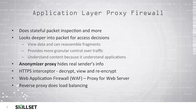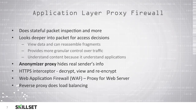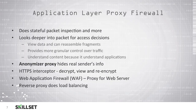Anonymizing proxies are able to hide a sender's information in order to prevent the recipient from knowing where the traffic actually originated. HTTPS interceptors are able to decrypt HTTPS traffic, view the traffic to determine if it's malicious or if it violates the security policy, and then re-encrypt the traffic and forward it on to its original destination.